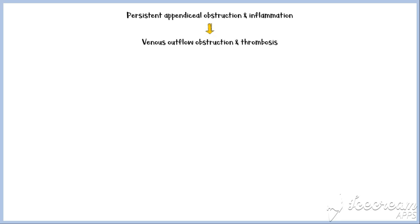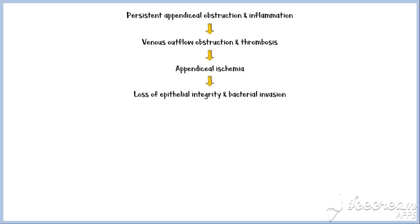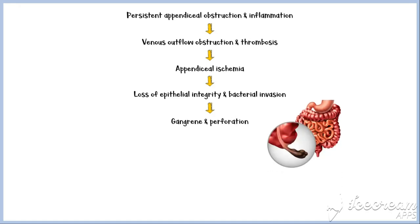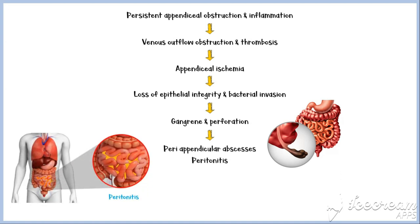If appendiceal obstruction and inflammation persist, intraluminal pressure rises ultimately above that of the appendiceal veins, leading to venous outflow obstruction and thrombosis. As a consequence, appendiceal wall ischemia begins, resulting in a loss of epithelial integrity and allowing bacterial invasion of the appendiceal wall. This will eventually lead to gangrene and perforation of the appendix. If this process continues, peri-appendicular abscesses and peritonitis may occur.